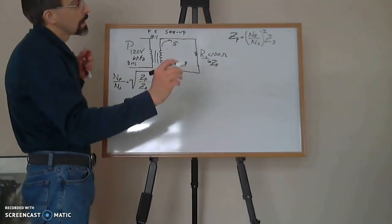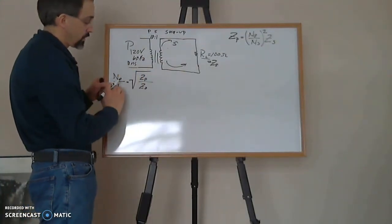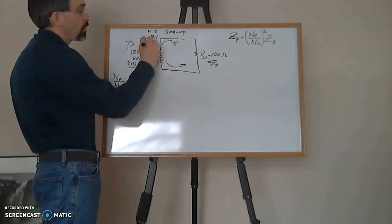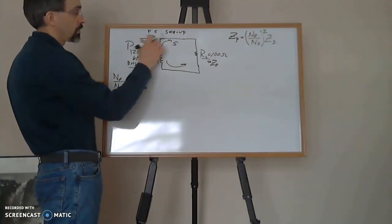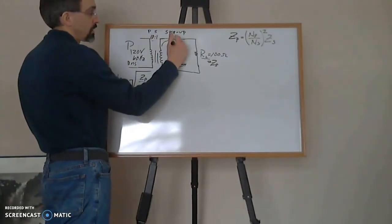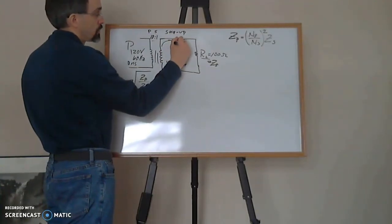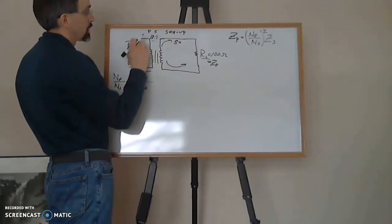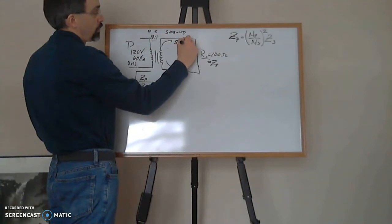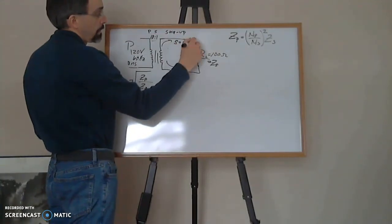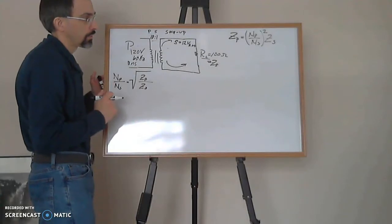So if we want to use this equation Np over Ns equals Zp over Zs, we have a 10 to 1 ratio right here for our turns. So the secondary voltage is going to be 120 divided by 10, which gives me 12 volts RMS.